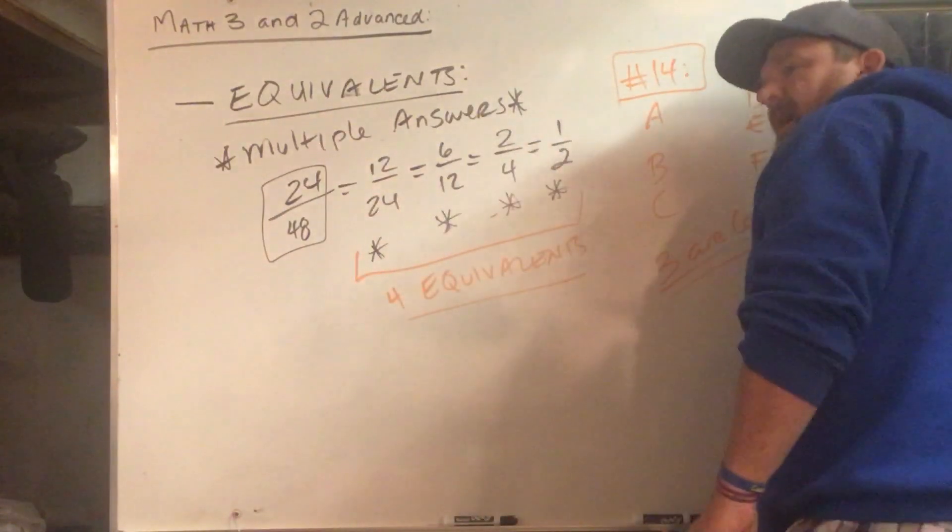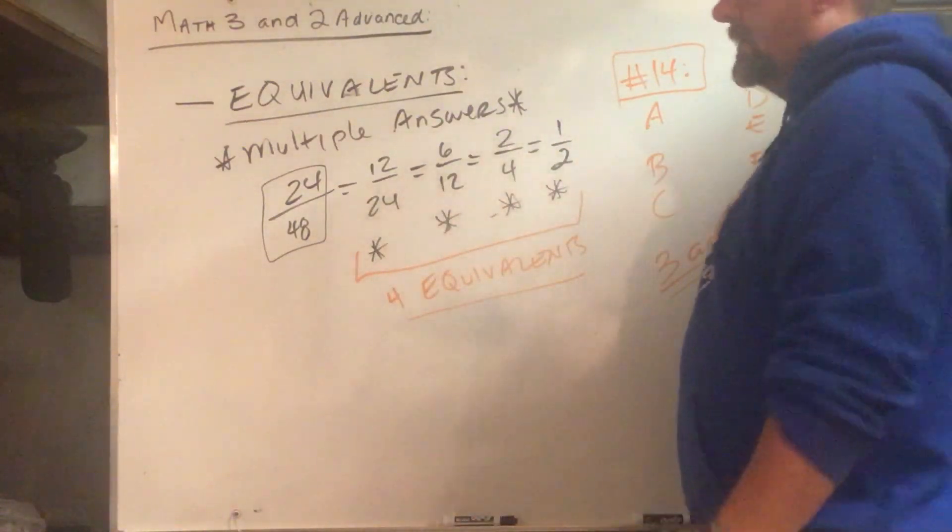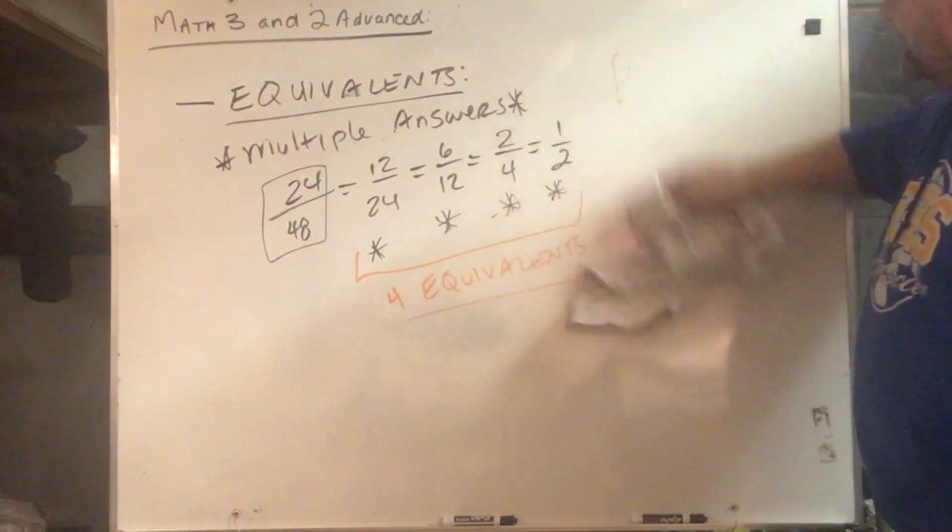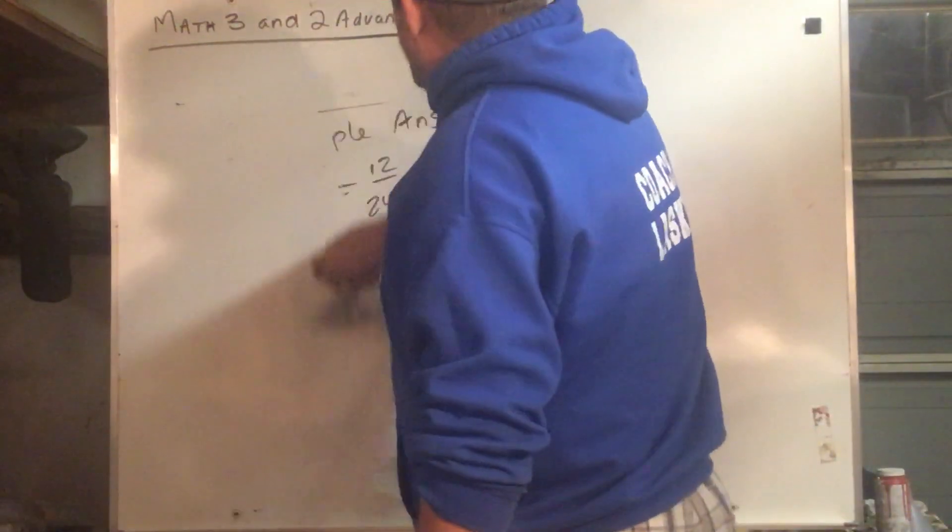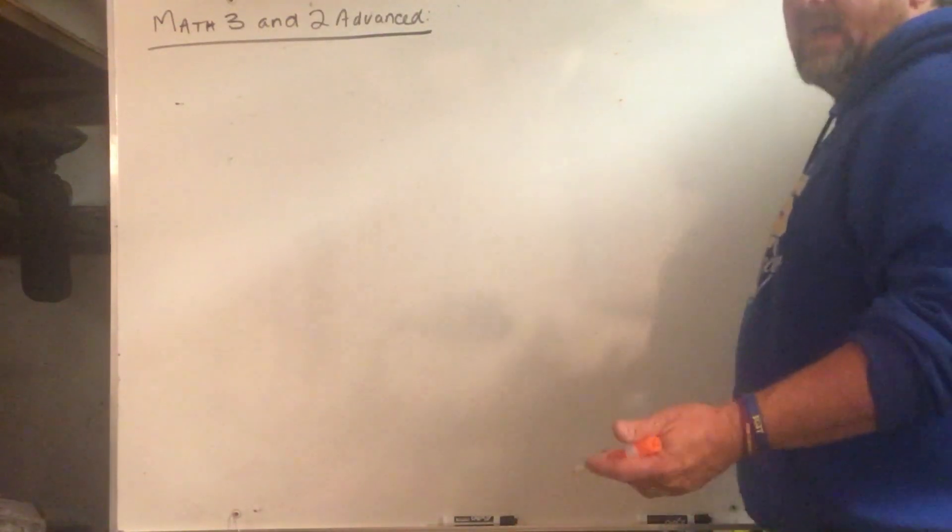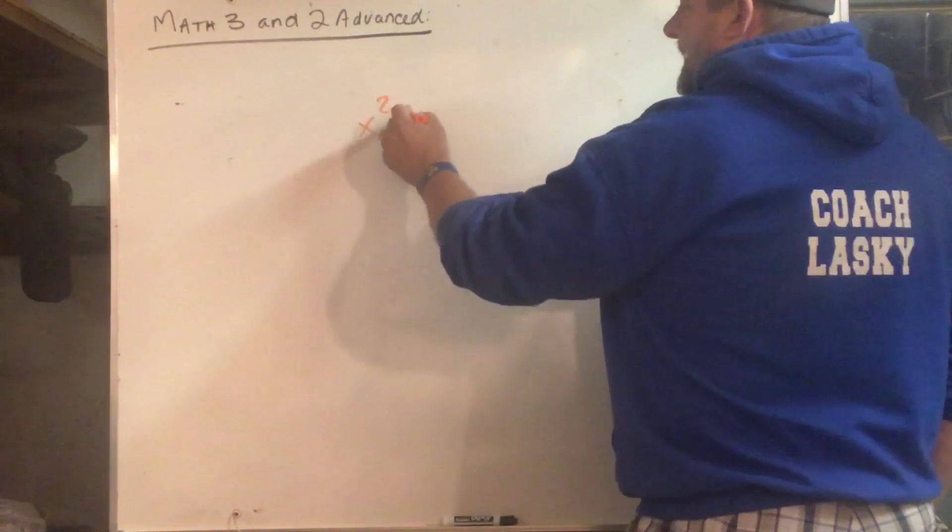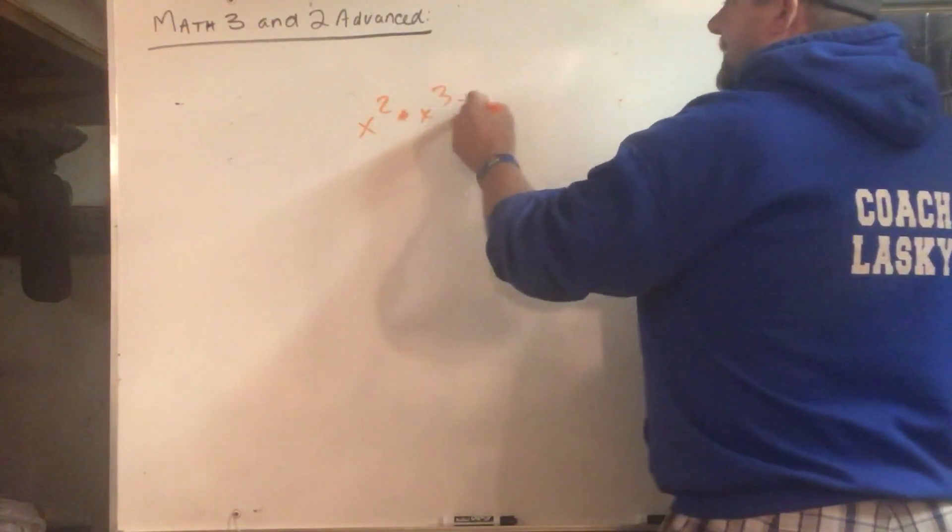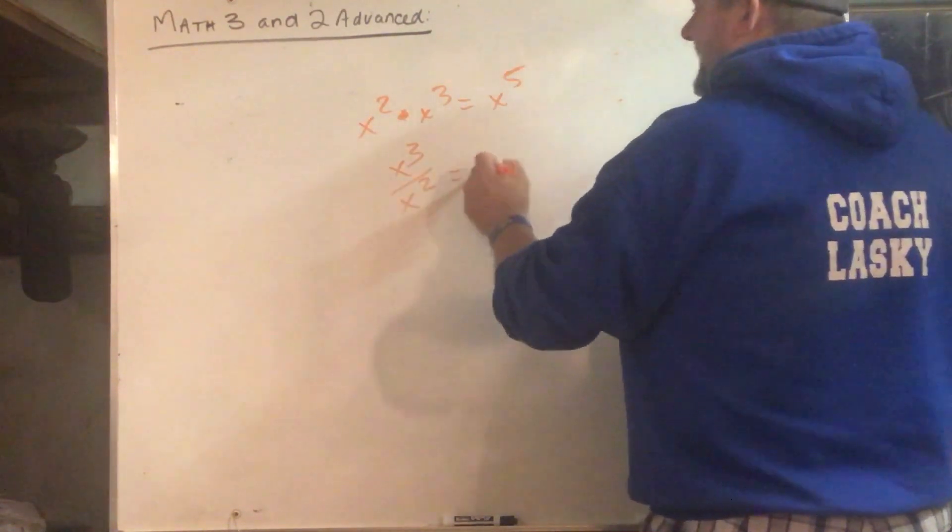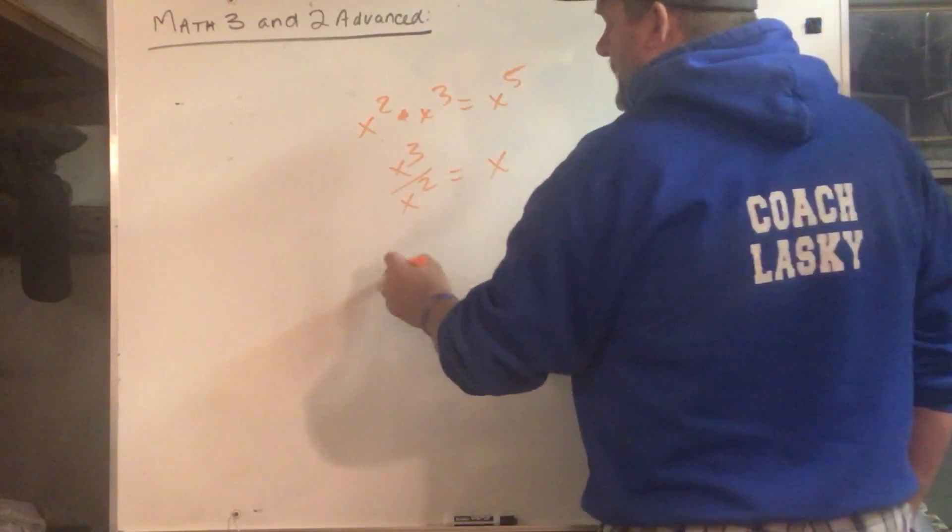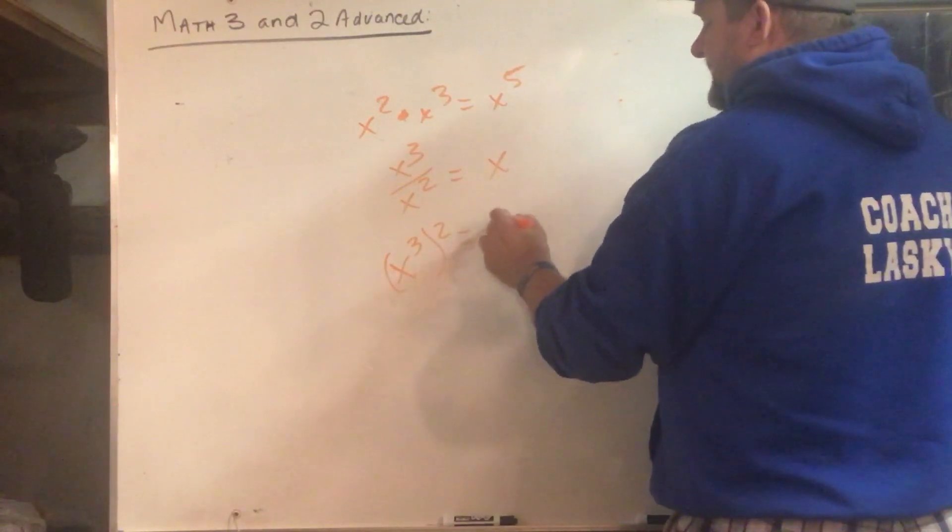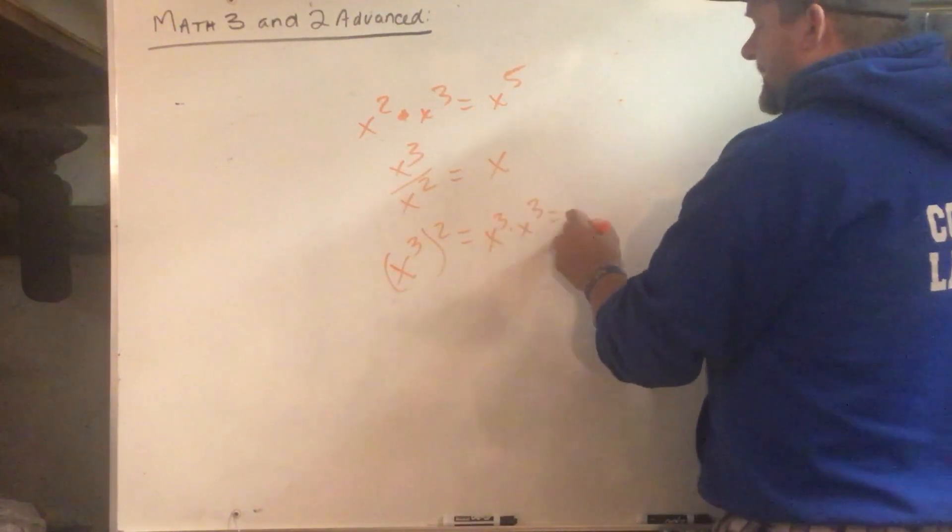The first two units are all about rationals and square roots, so don't forget your rules for exponents. When you multiply, you're adding them. When you divide them, you are subtracting them. And then the power to a power, you multiply, which is really x to the third times x to the third, which is x to the sixth.